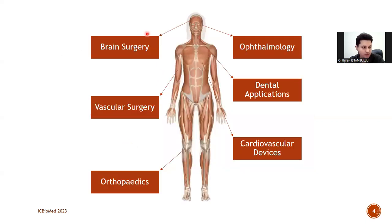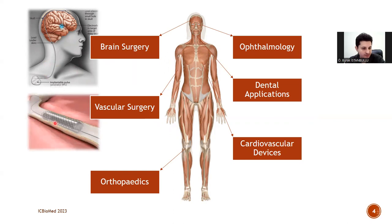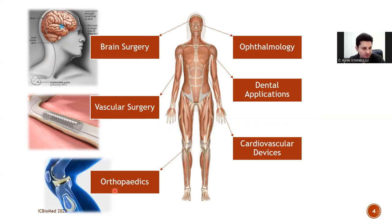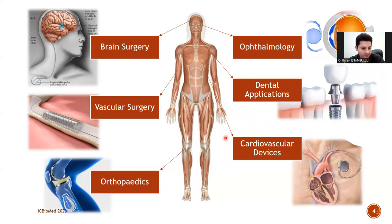Biomaterials can be utilized to support almost all parts of the human body. For instance, implantable pulse generators or cerebral vessels in brain surgery, intravascular stents for vascular surgery, knee joint replacements in orthopedics, contact lenses or intraocular lenses in ophthalmology, and dental implants or pacemakers as cardiovascular devices. The main point is that any biomaterial can be placed and implanted in the human body, and therefore they are in contact with the tissue or organ regardless of the region used.